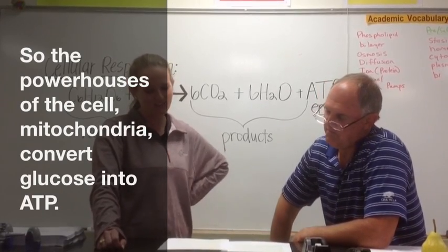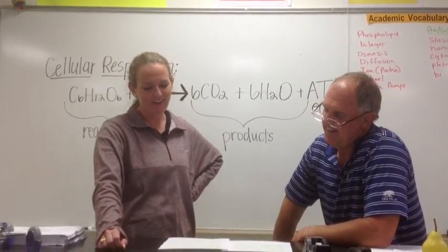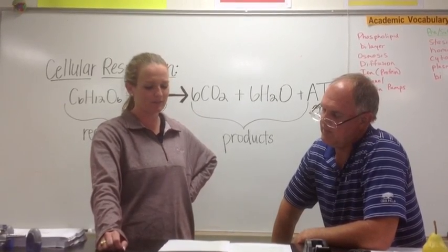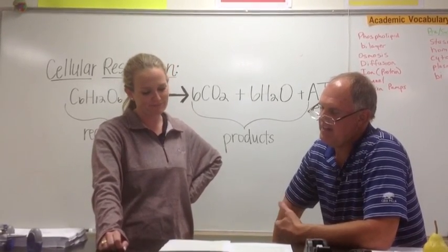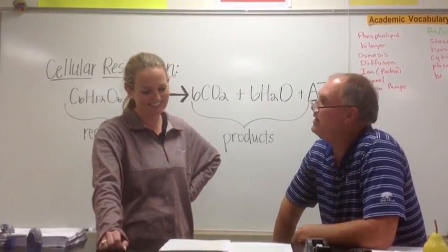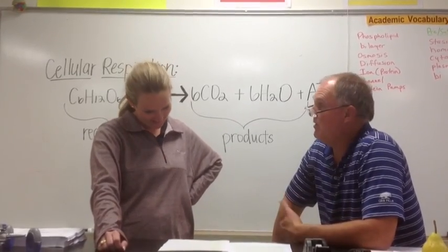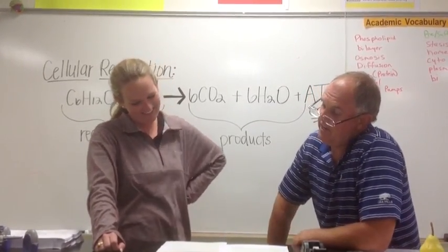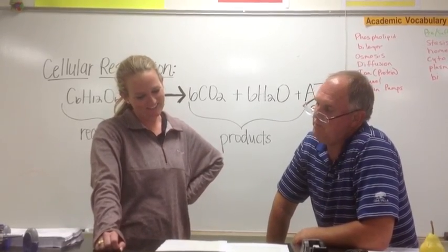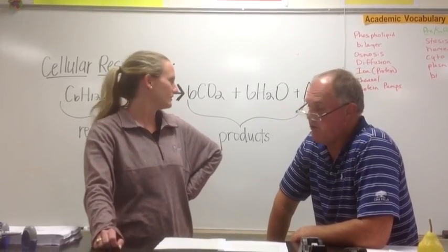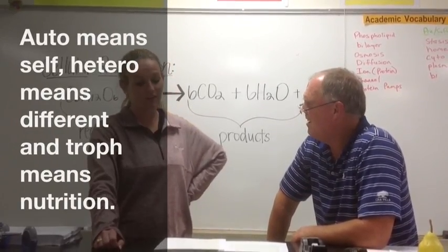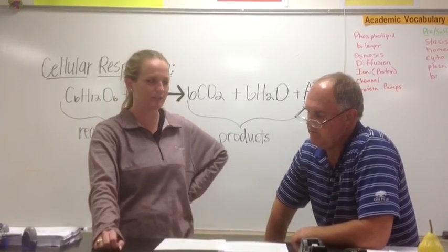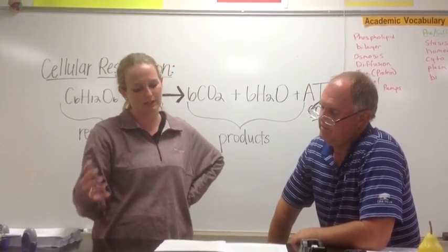If plants are autotrophs, then animals are heterotrophs. Heterotrophs do not make their own food — they must consume food from a different source to get their glucose. You and I need to eat breakfast, lunch, and dinner every day to get our glucose. Hetero means different and troph means nutrition. Heterotrophs and autotrophs both need to use the process of cellular respiration to convert glucose to ATP.